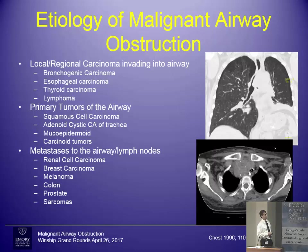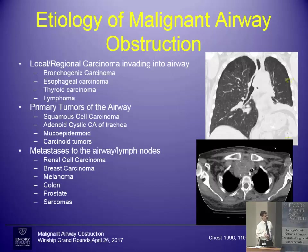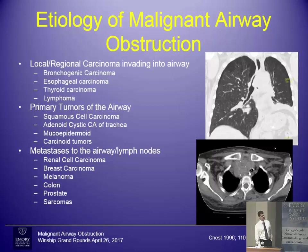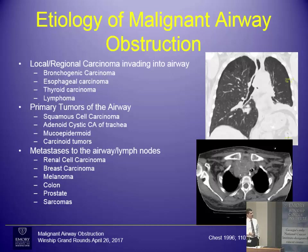Lung cancer is the most common cause of malignant airway obstruction, but anything in and around the airway can lead to problems. Esophageal cancers, thyroid malignancies, and goiters can fall into this category — though goiters are usually easier to fix with debulking from outside. Lymphoma, which we see a lot, causes obstruction more in the proximal airway. There are primary tumors of the airway — the most common being carcinoid tumors — but also rarer cancers like mucoepidermoid cancers and adenoid cystics that rely heavily on debulking and local therapy. Metastases from melanoma, renal cell, and breast cancers are the most common we're seeing.